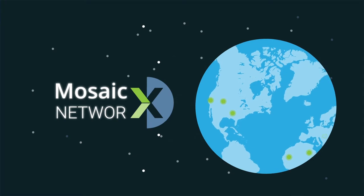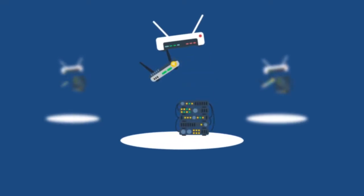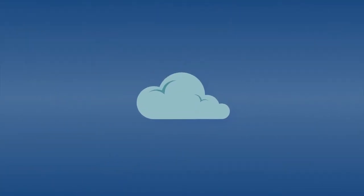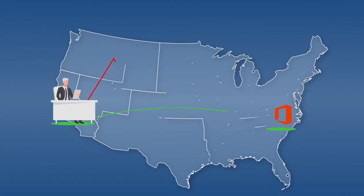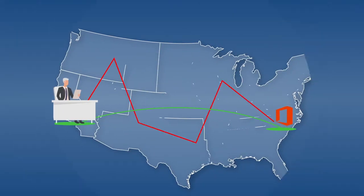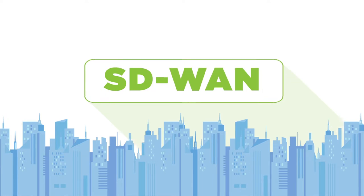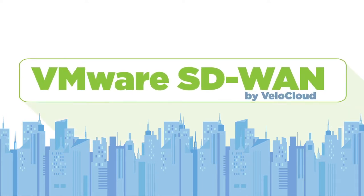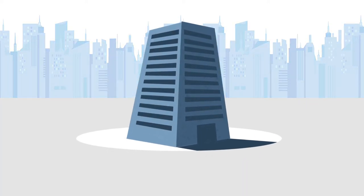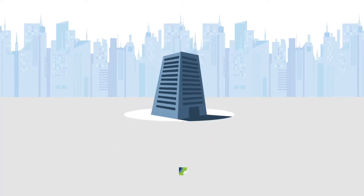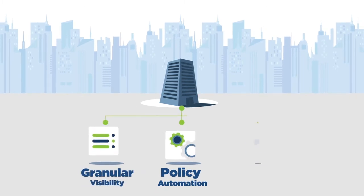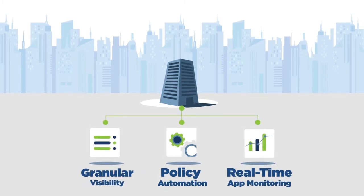Mosaic SoftWave SD-WAN is the answer with a cloud-native network that is software-defined, featuring network functions like optimal path selection and policy-based security enforcement delivered as virtual services. Mosaic SoftWave SD-WAN as a service is built around the industry-leading VMware SD-WAN by Velocloud. Mosaic SD-WAN as a service optimizes cloud app performance with centralized management and orchestration for policy automation, granular visibility, and real-time app monitoring.